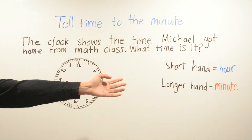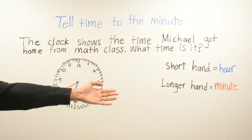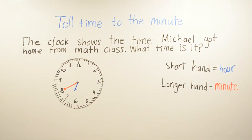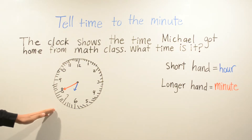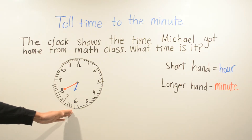The short hand is the hour and the longer hand is the minute. For this example, we have the clock showing the time Michael got home from math class. What time is it? The first thing you want to start off is by finding the hour, then finding the minute. So the hour — it has passed 6, but it hasn't reached 7, so the hour is still 6.